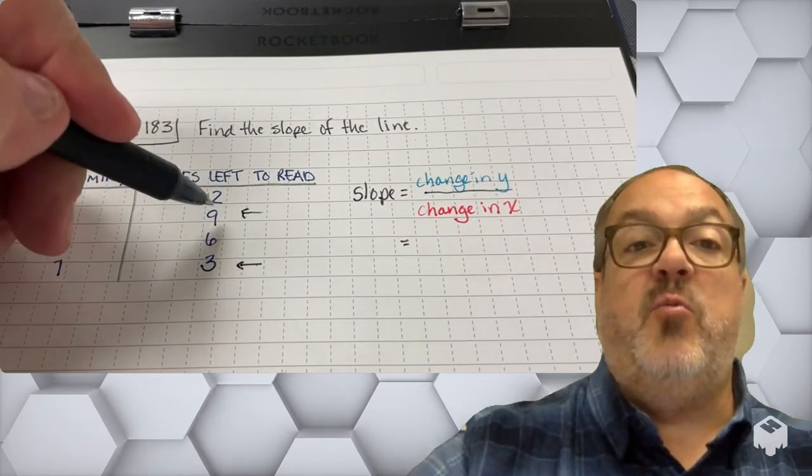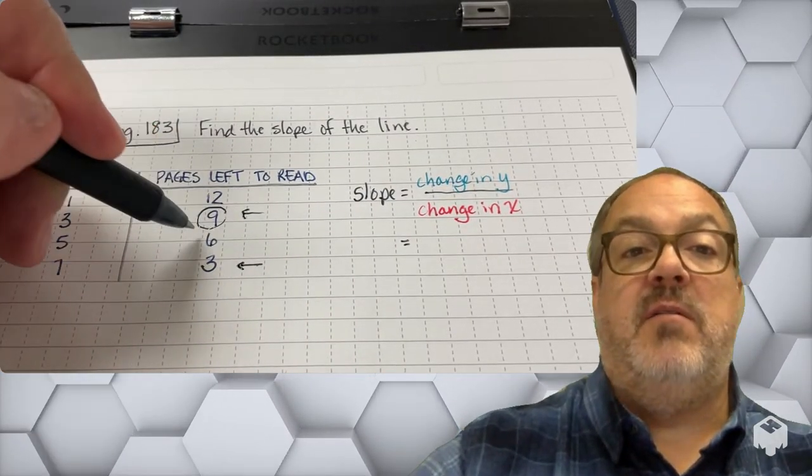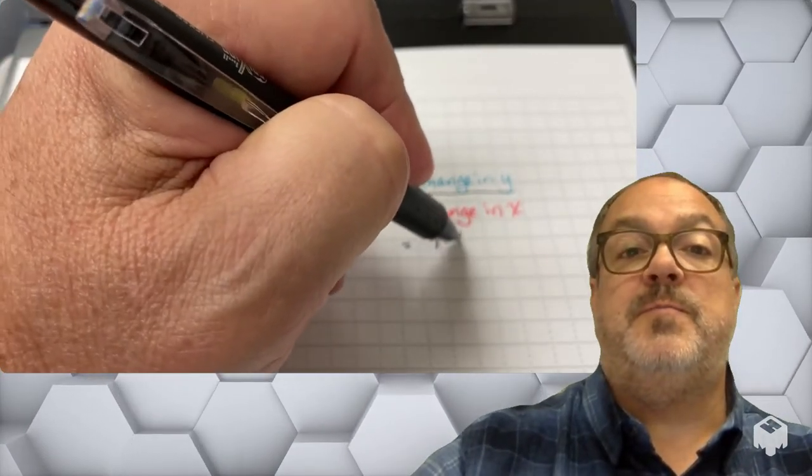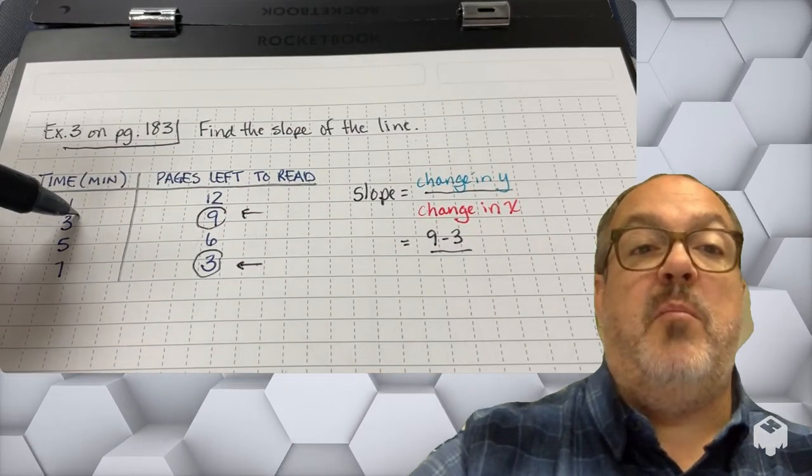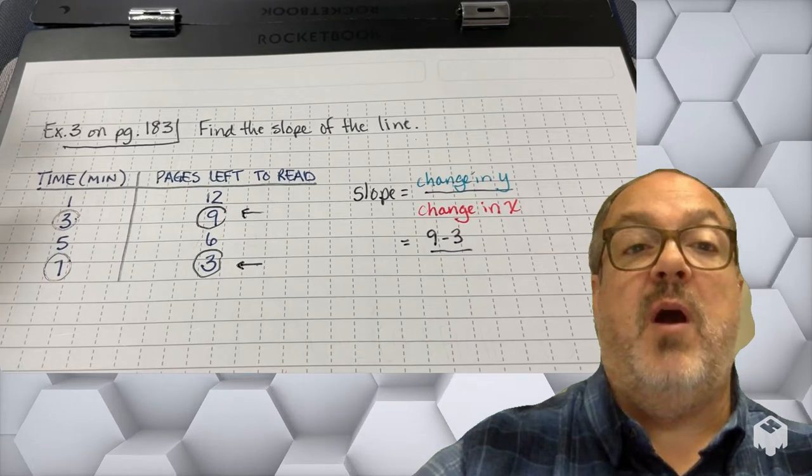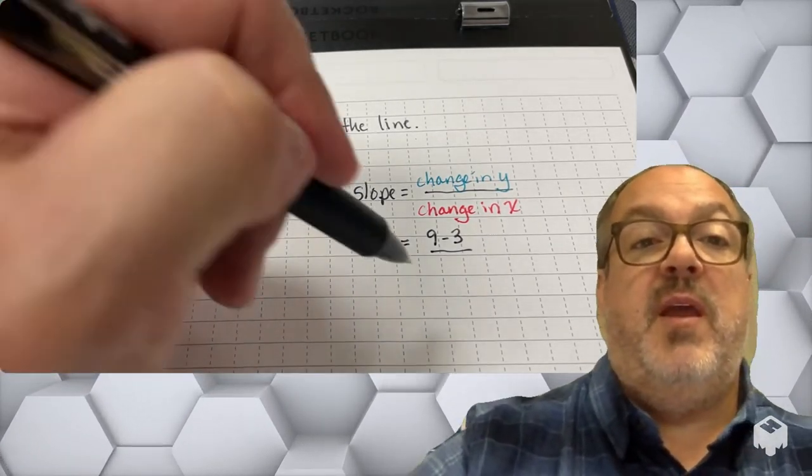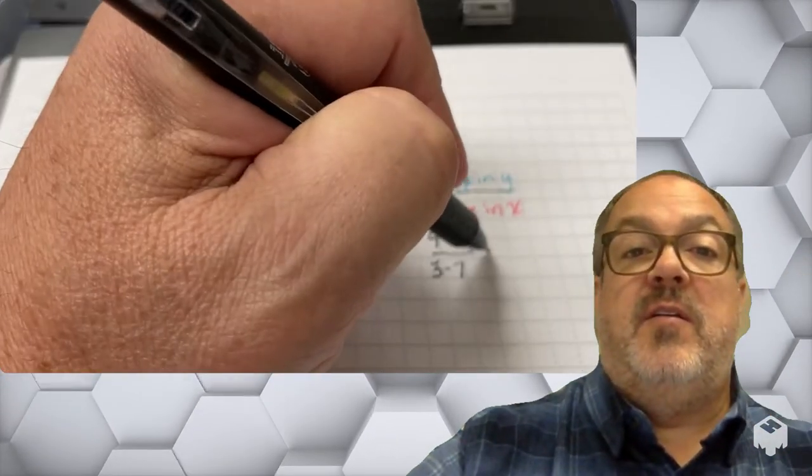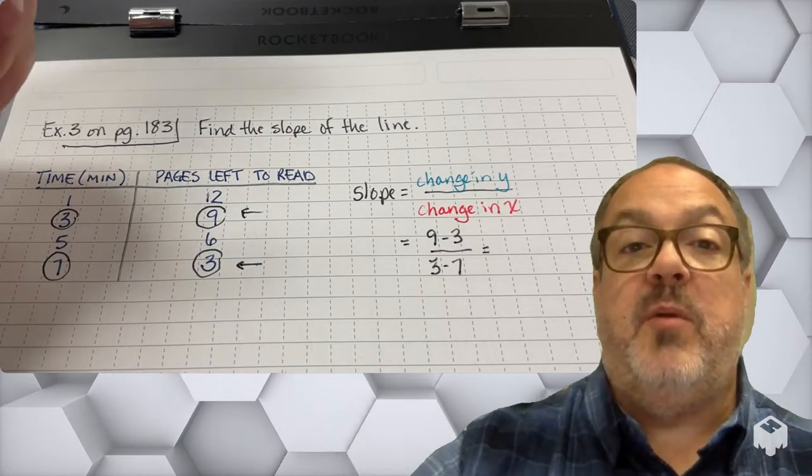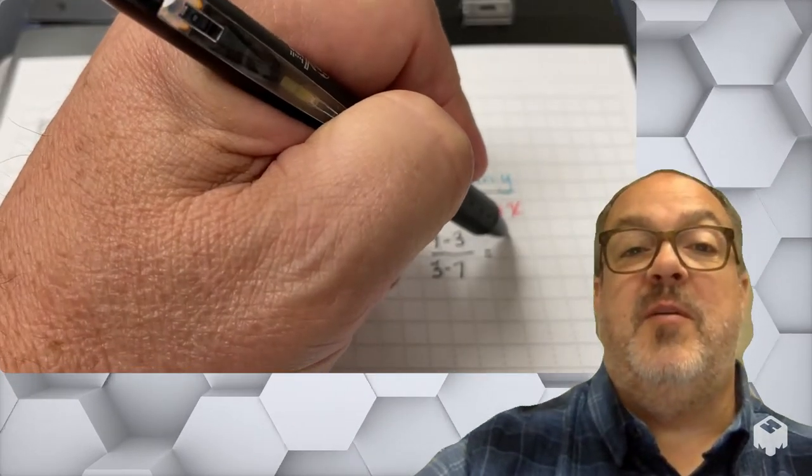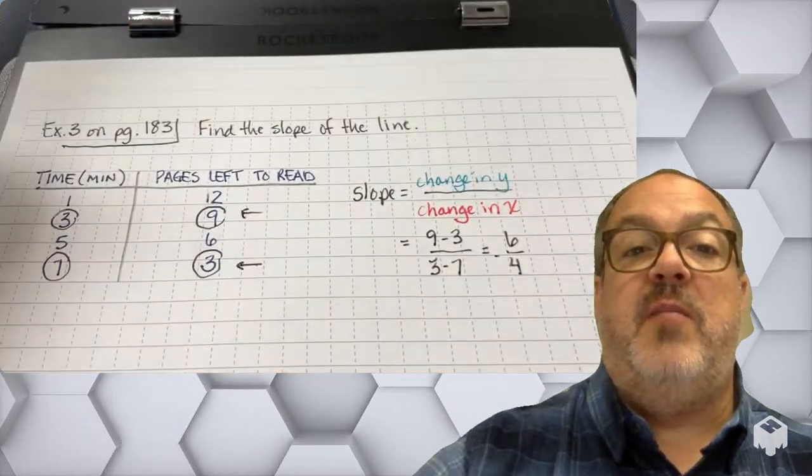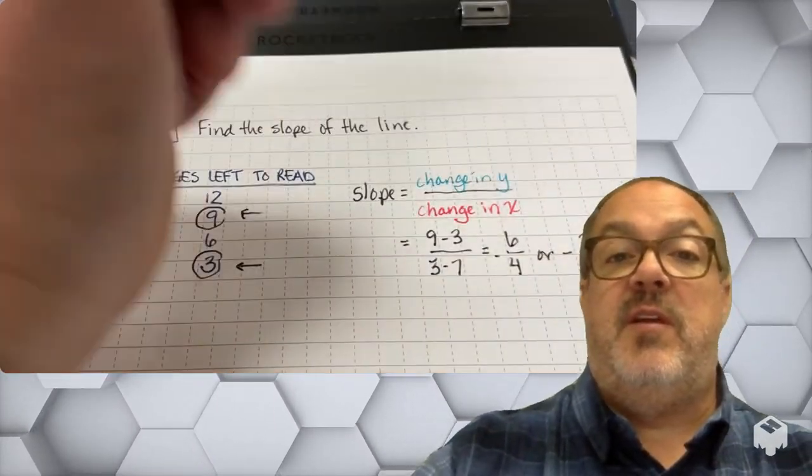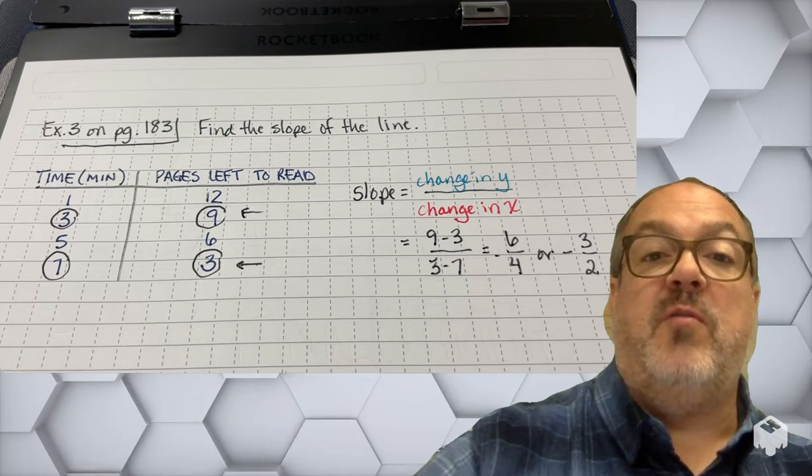So I'm going to find my change in y, so from 9 to 3, so I'm just going to write that as 9 minus 3. And I'm going to divide that by the change in my x value, so I'm going to have 3 minus 7. So 9 minus 3, that'll be 6. And then 3 minus 7, that's going to be a negative 4. I can have negative slopes. So the slope of this line is negative 3 over 2.